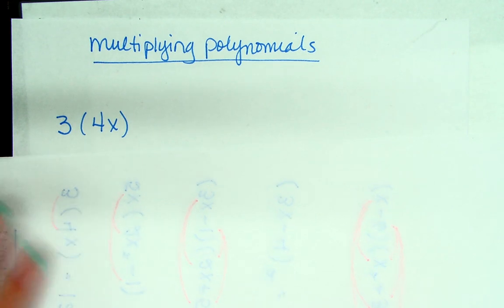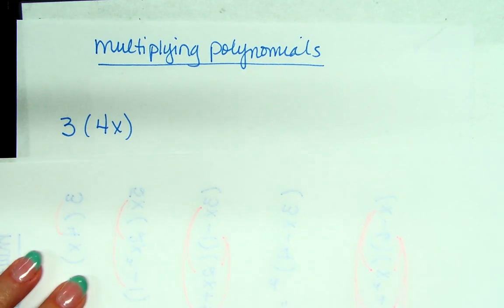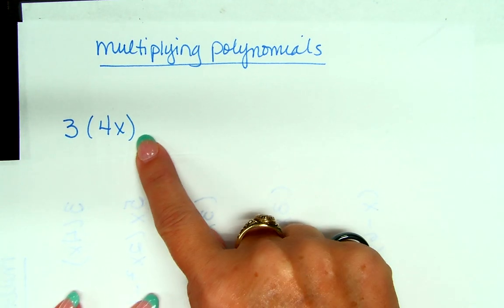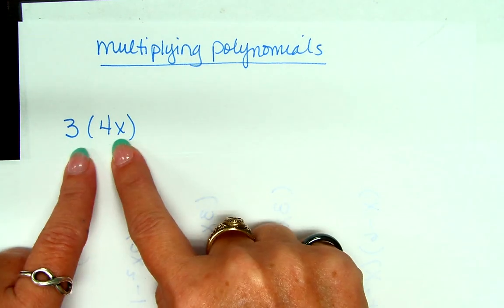What do you know about multiplying polynomials? Easy. They're easy? Okay, why are they easy? Because it's just 3 times 4. It's just 3 times 4? You can multiply 3 and 4x? Yes. I thought we couldn't do that for unlike terms.